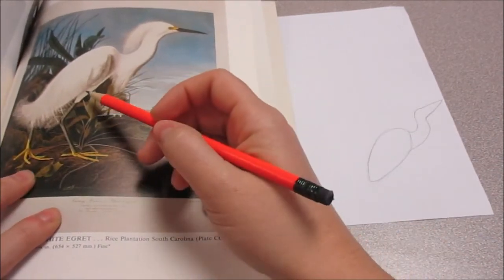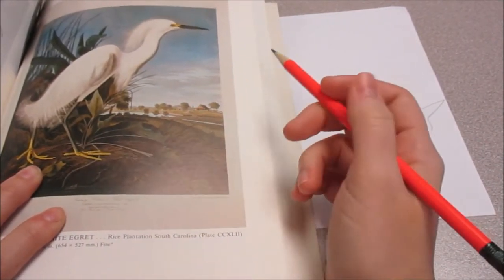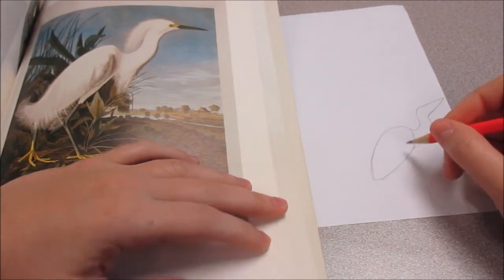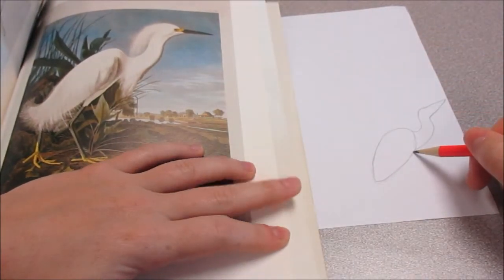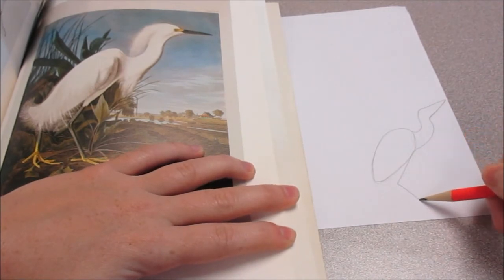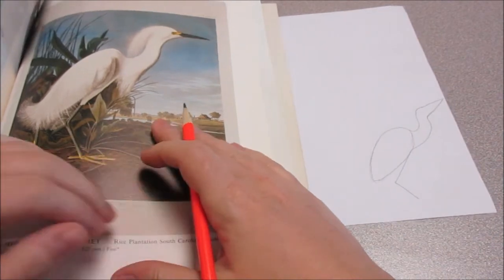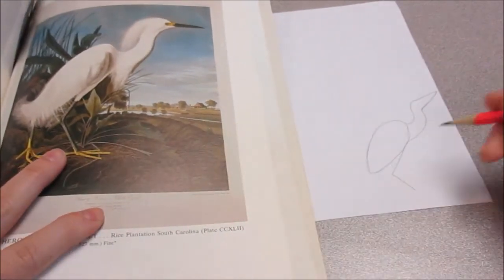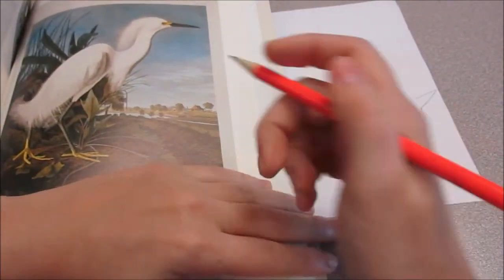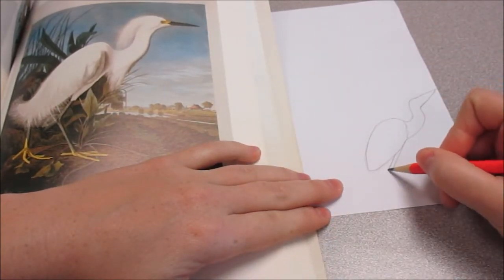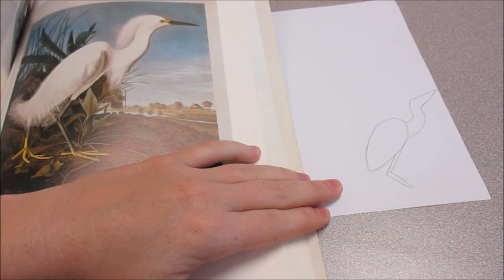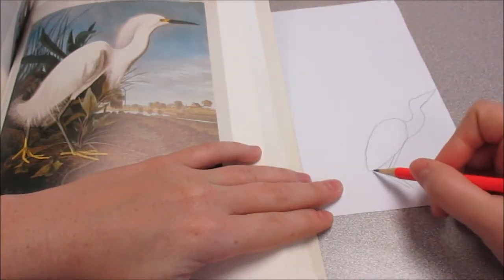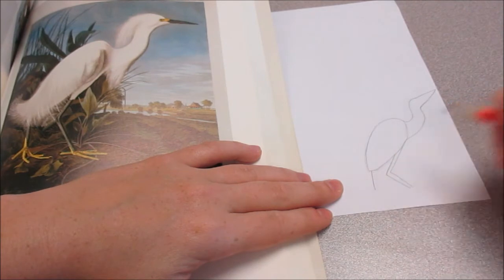Let's look at the legs. The legs come back and then they have these long-toed talons. His leg starts way up here on his body. So start up here. Back and forward. Back and forward.